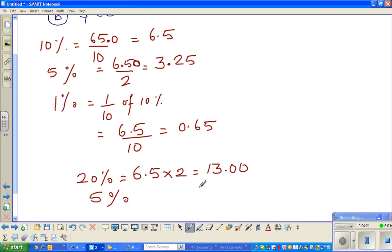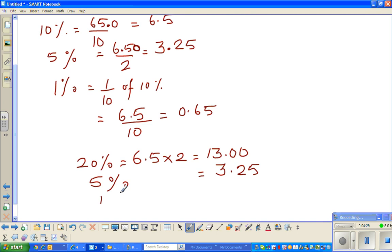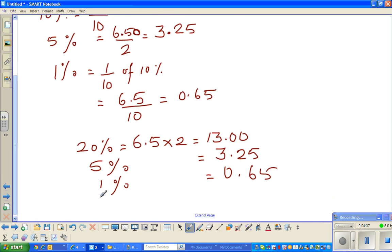Then we know 5 percent. 5 percent we already know is 3.25. And then you already also know that 1 percent is 0.65. And I want 26 percent. So I hope you can see 26 percent is 20 percent plus 5 percent plus 1 percent.